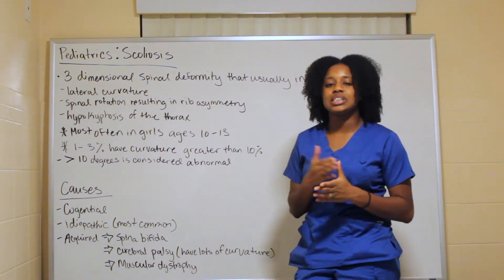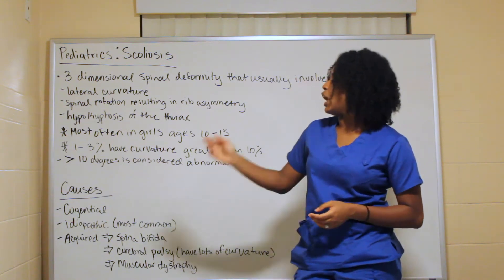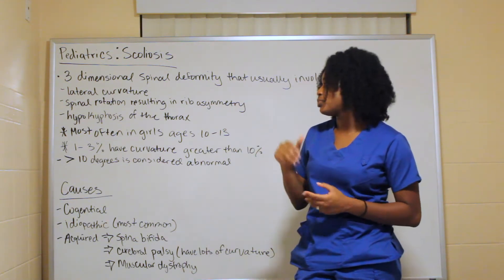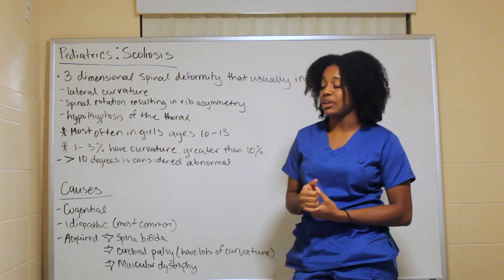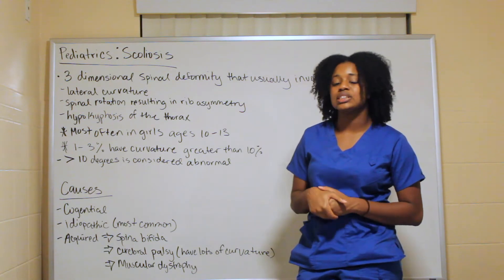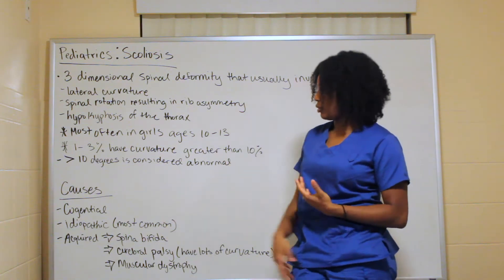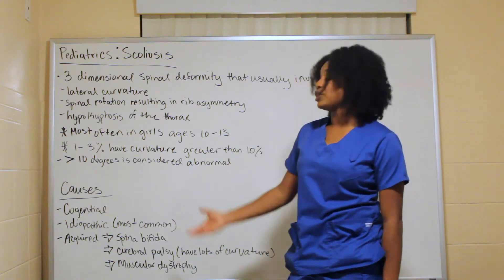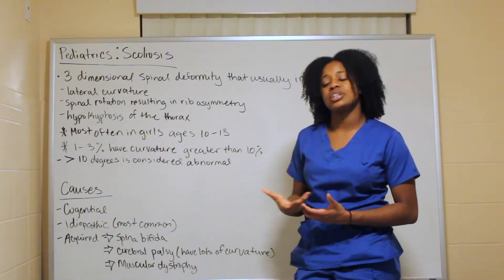Scoliosis is most often seen in girls between the ages of 10 to 13 years — your preteen and teenager age group. As a fun fact, one to three percent of that population have a curvature greater than 10 degrees, and anything greater than 10 degrees is considered abnormal.